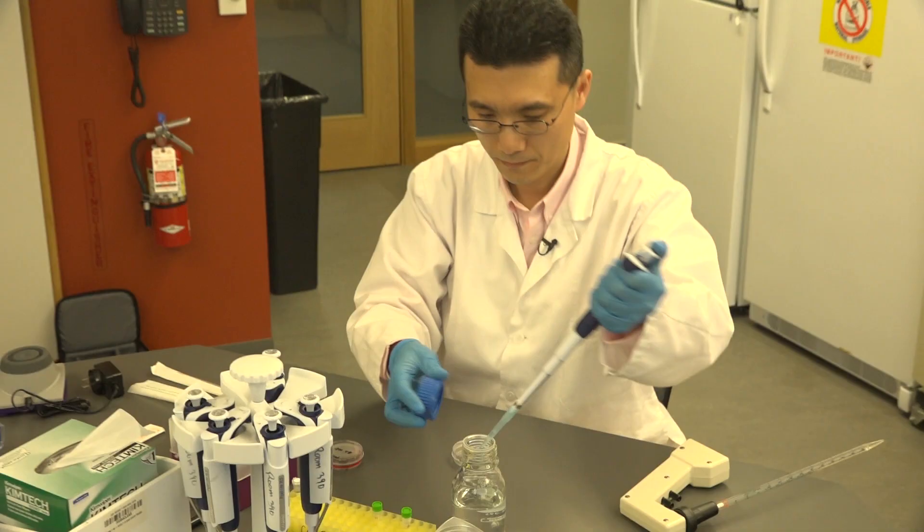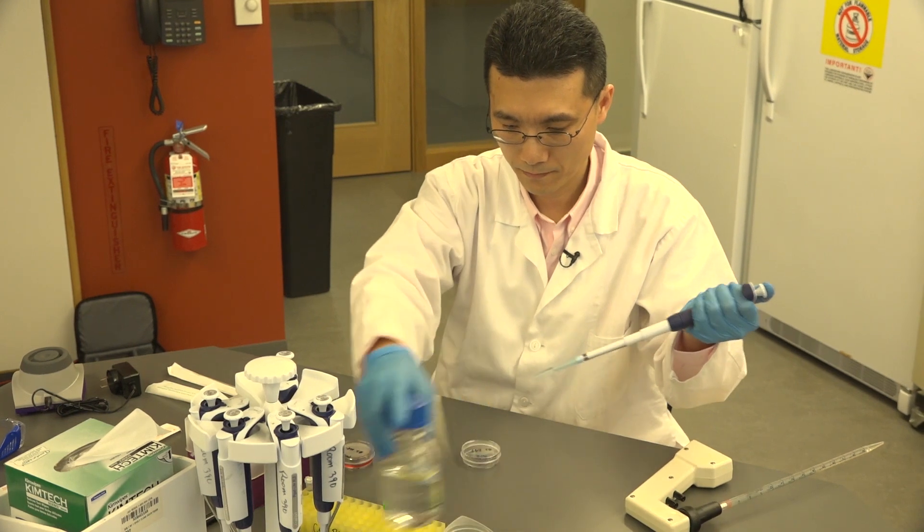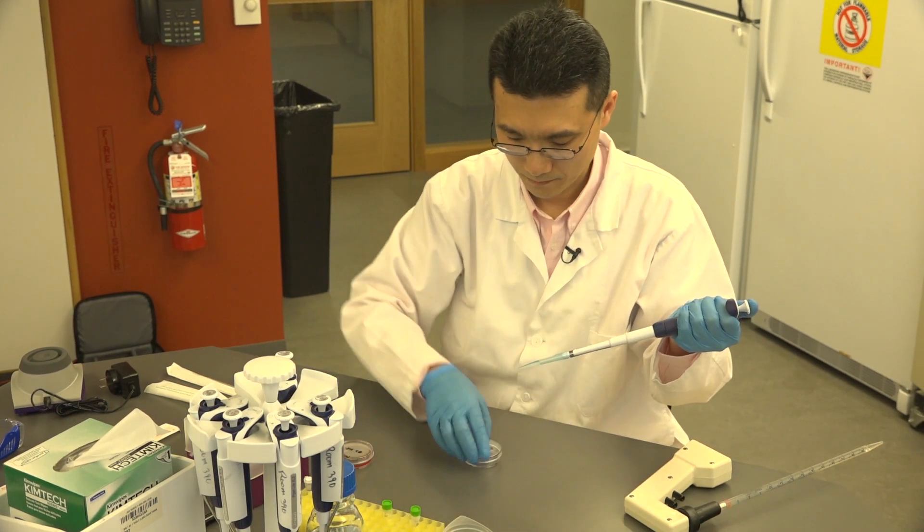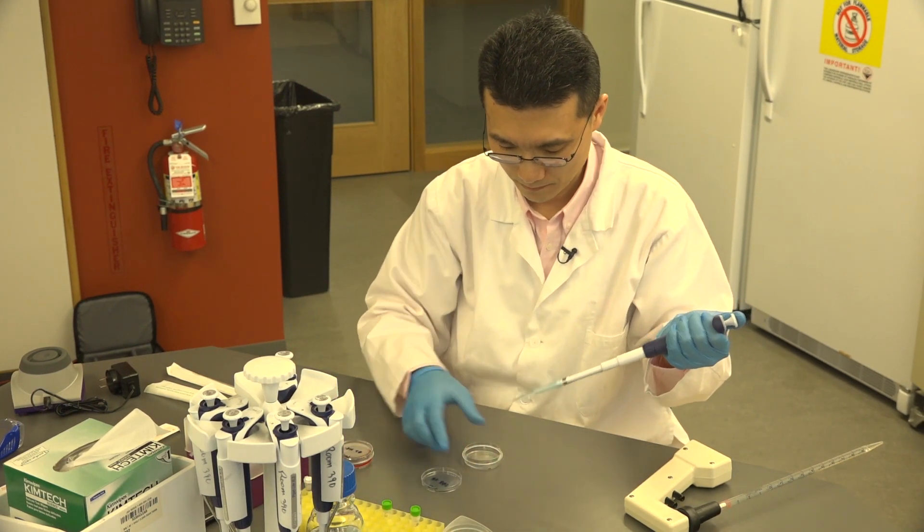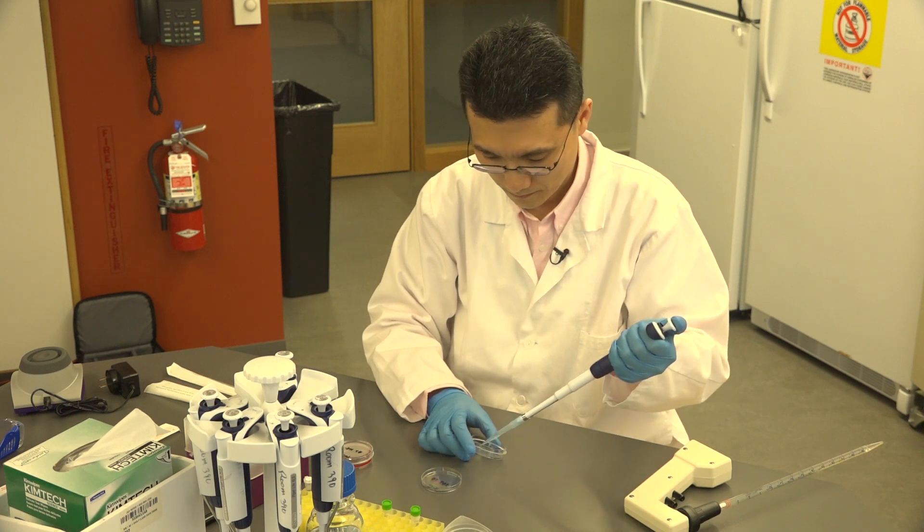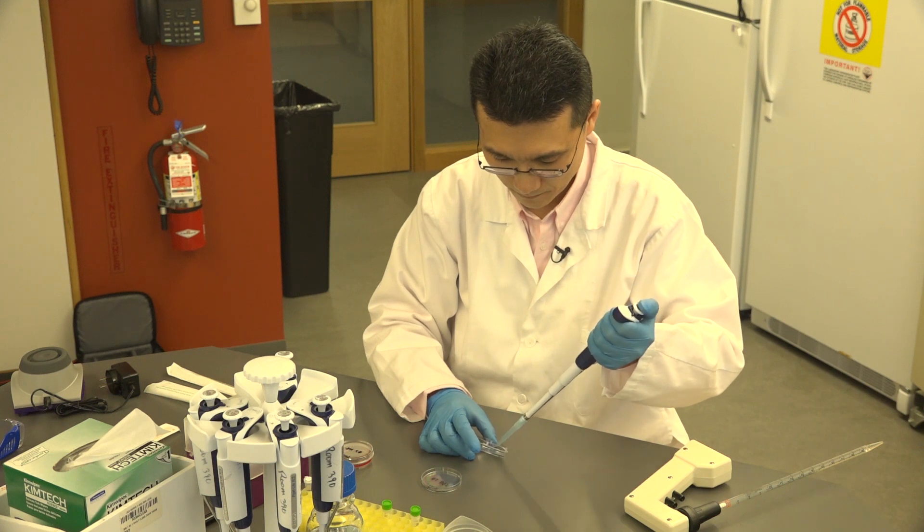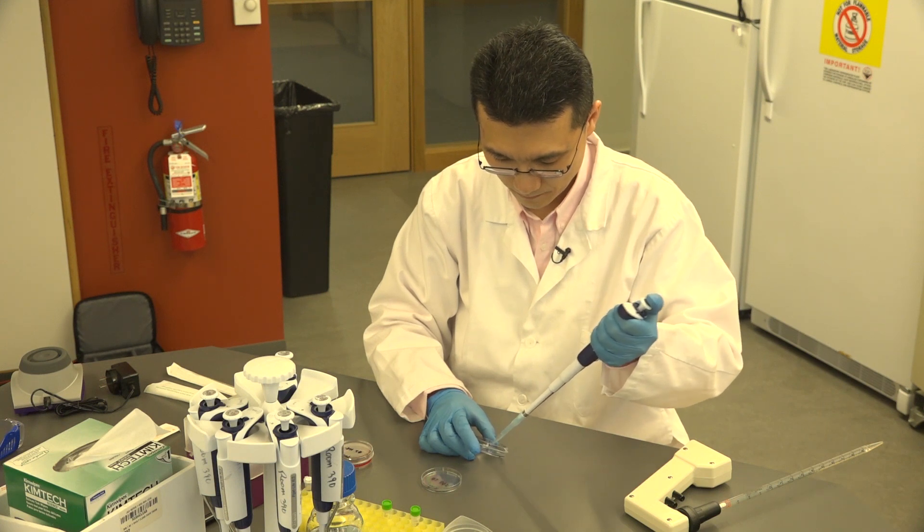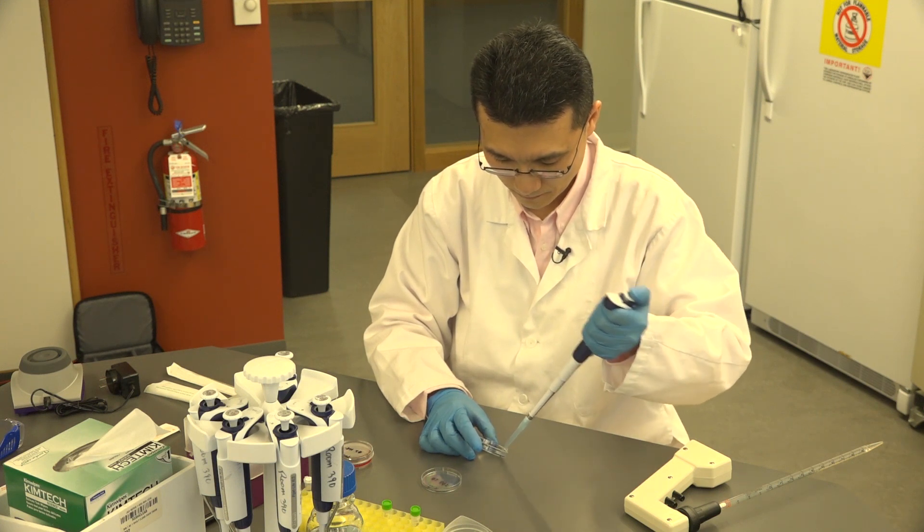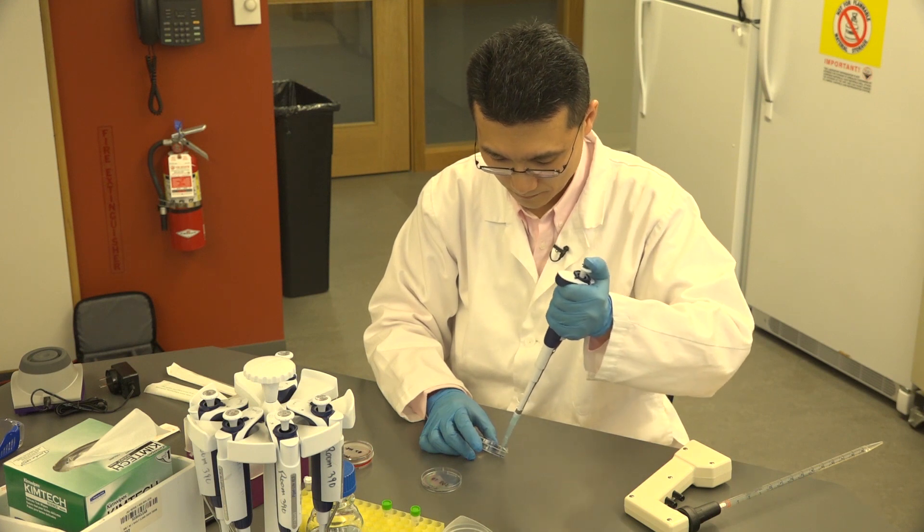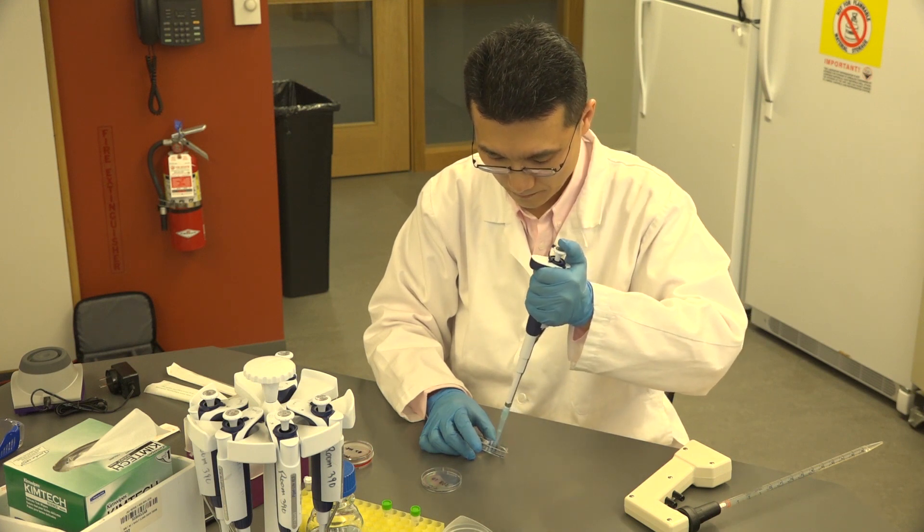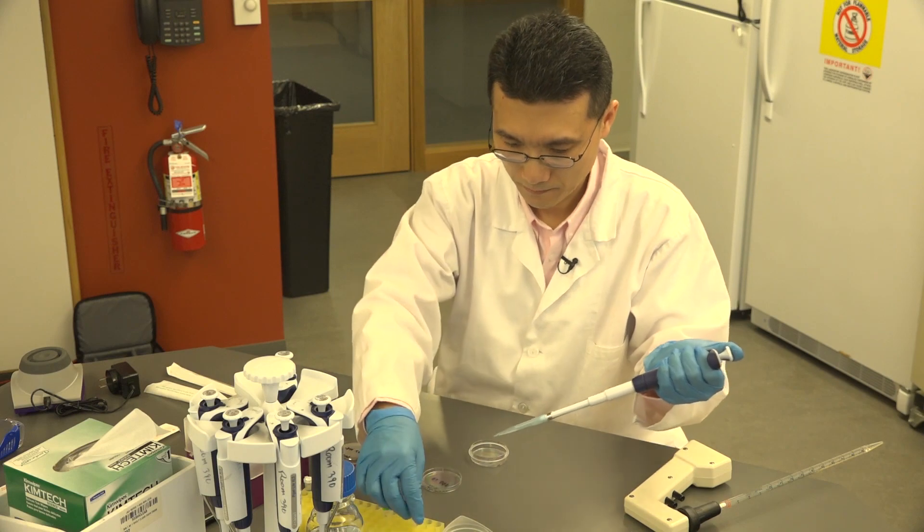Pipette an additional 500 microliters of TBS into each dish to recover the remaining cells in the dish. Again, tilt your dish and rinse off the cells to the bottom corner. Then pipette all the cells into the 2-mil tube containing the first 1-mil cell suspension. Remember to use a new scraper for each dish.